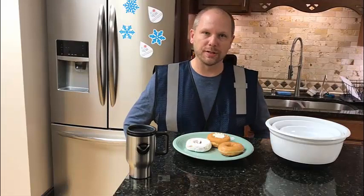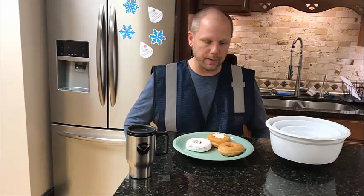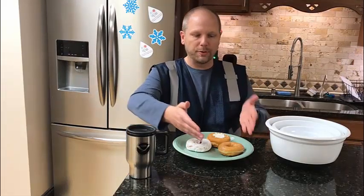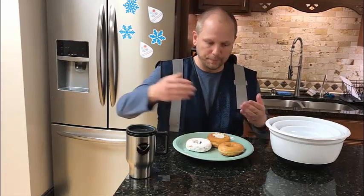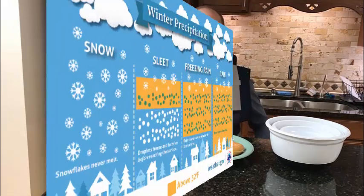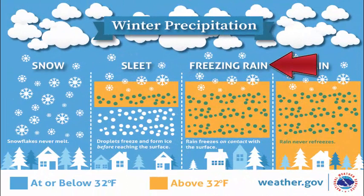And lastly, the third type of frozen precipitation I'd like to talk about is freezing rain, which is represented by this glazed donut right here. Freezing rain, similar to the other frozen precipitation types, falls through a cloud, starts out as frozen precipitation, and is allowed to melt just like sleet as it goes through a warm layer.